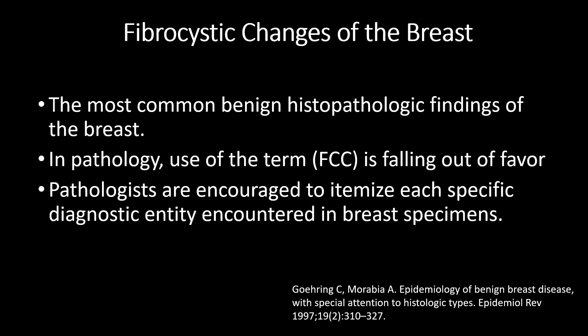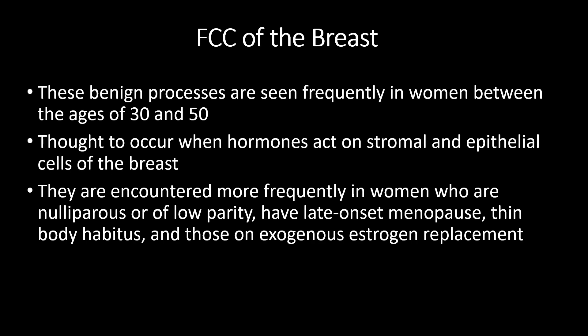Fibrocystic changes of the breast are the most common benign histopathologic findings of the breast. In pathology, use of the term fibrocystic change is falling out of favor; pathologists are encouraged to itemize each specific diagnostic entity encountered in breast specimens. These benign processes are frequently seen in women between the ages of 30 and 50, and are thought to occur when hormones act on stromal and epithelial cells of the breast. They are encountered more frequently in women who are nulliparous or of low parity, have late onset menopause, thin body habitus, and in those on exogenous estrogen replacement.